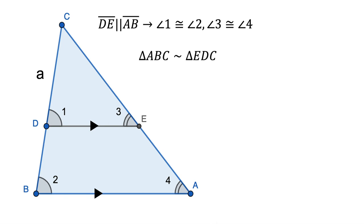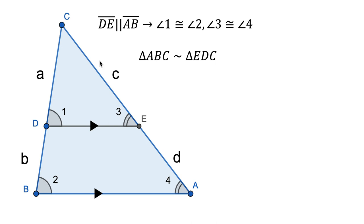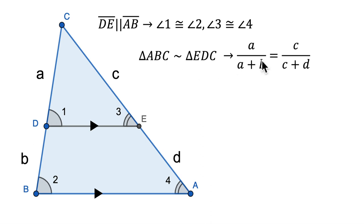If you have two similar triangles, it means their side lengths are in proportion. The ratio between A and A plus B is equal to the ratio between C and C plus D. So the ratio of the smaller sides of the smaller triangle to the larger sides is equal — that's what it means to have similar triangles. This is the proof of the side splitter theorem. The product of the means equals the product of the extremes, this cross product.